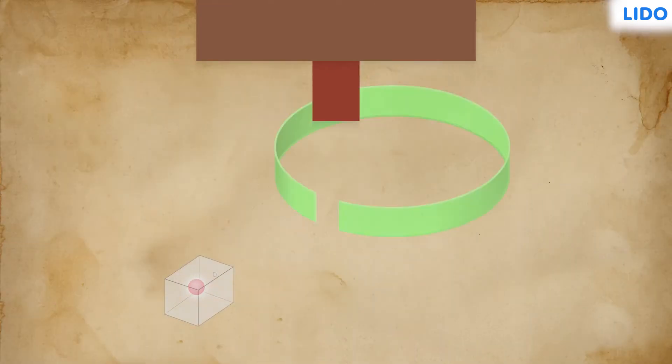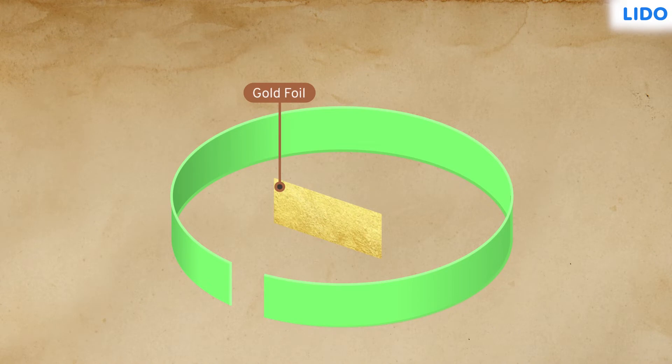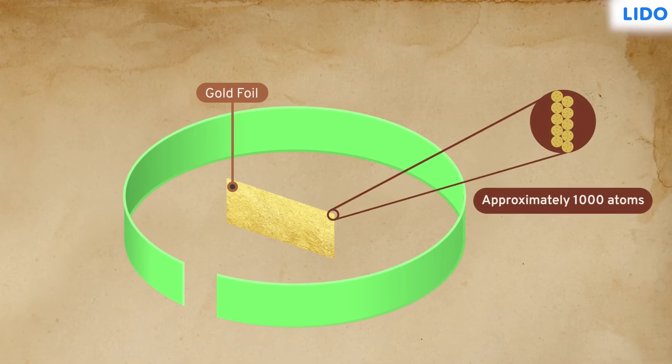The alpha particles were bombarded on a gold foil. He used gold as he needed an extremely thin foil which he assumed would have only around 1000 atoms, which would be convenient for the experiment.